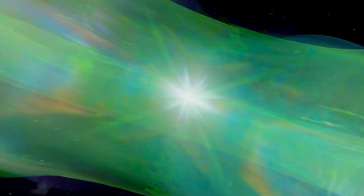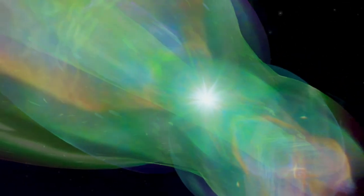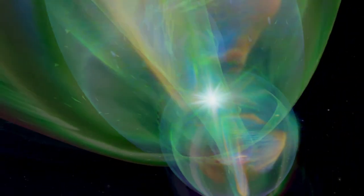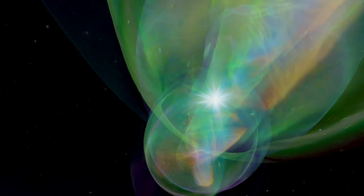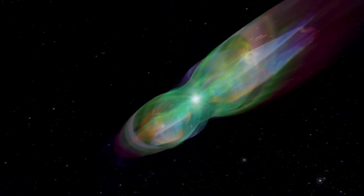As many other planetary nebulae, the Twin Jet Nebula has a morphology that recalls the wings of a butterfly. This is due to twin lobes of gas expanding from the central star.